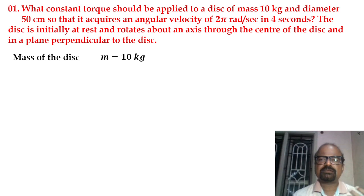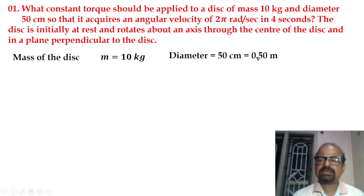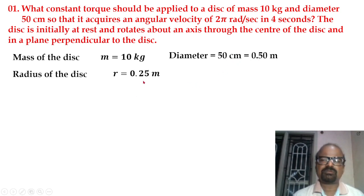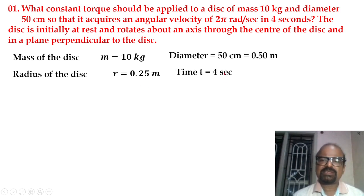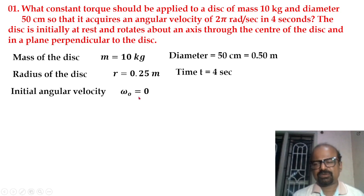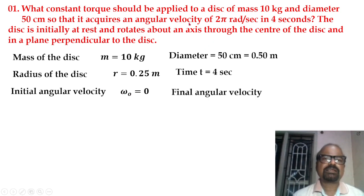The mass of the disk is 10 kg and diameter is 50 cm. The diameter is 0.50 meter, so the radius of the disk is 0.25 meter. The time is 4 seconds. The disk is initially at rest, so initial angular velocity is 0. The final angular velocity is 2π radians per second.